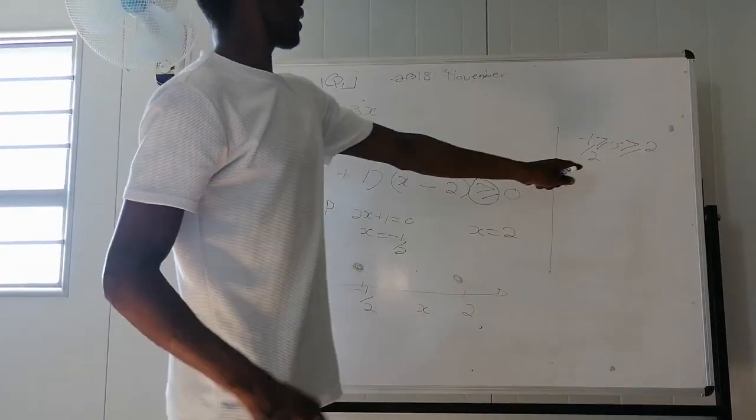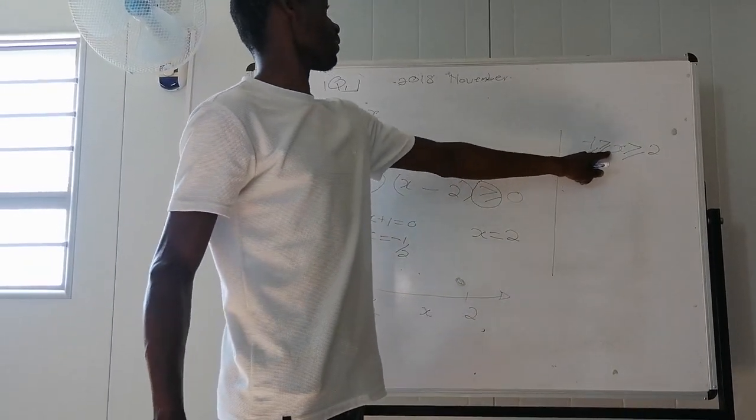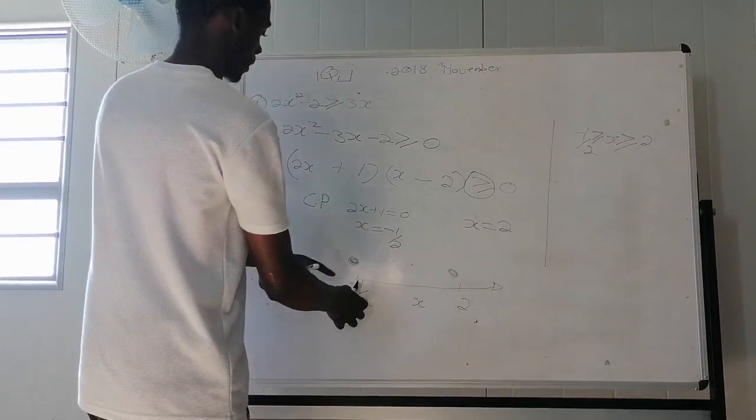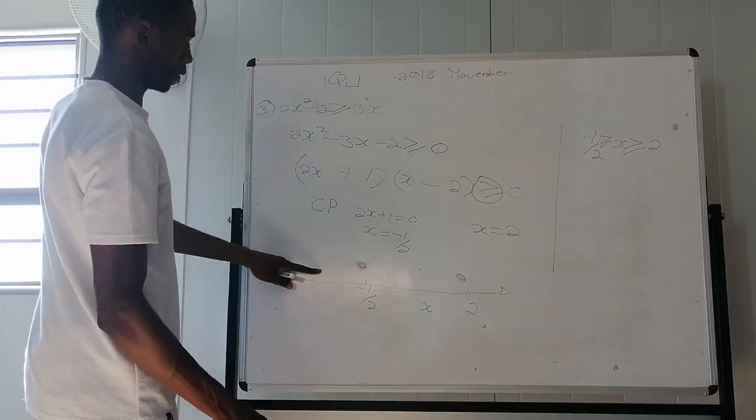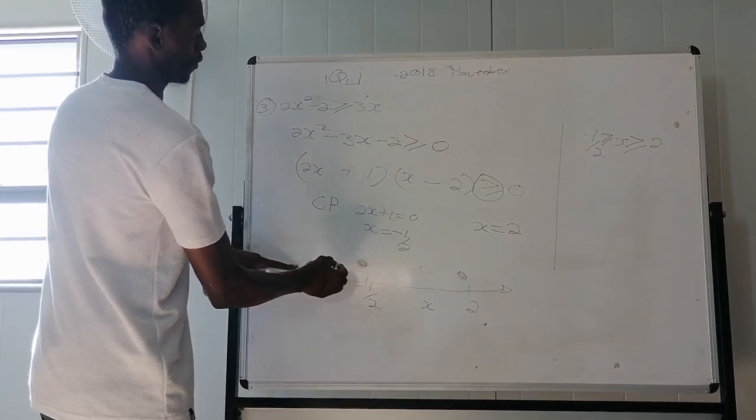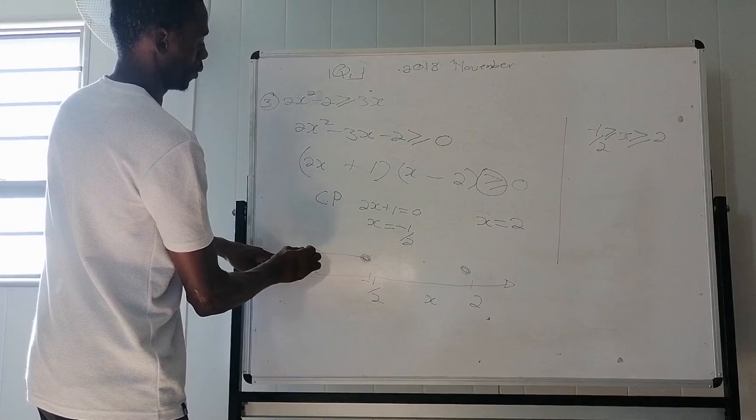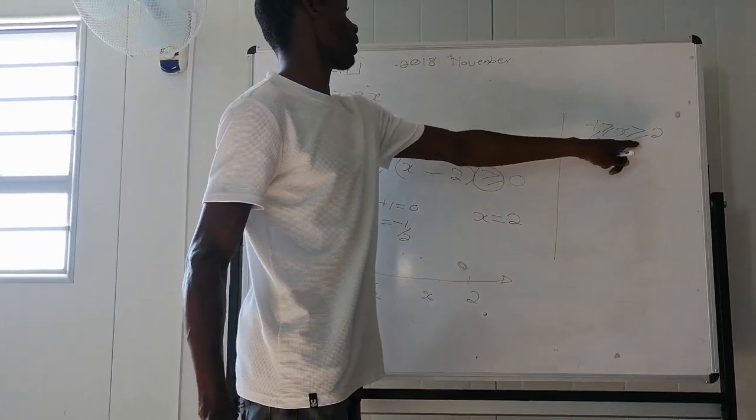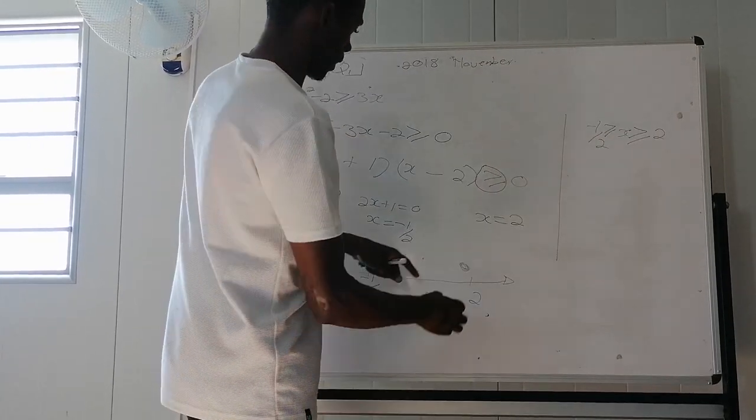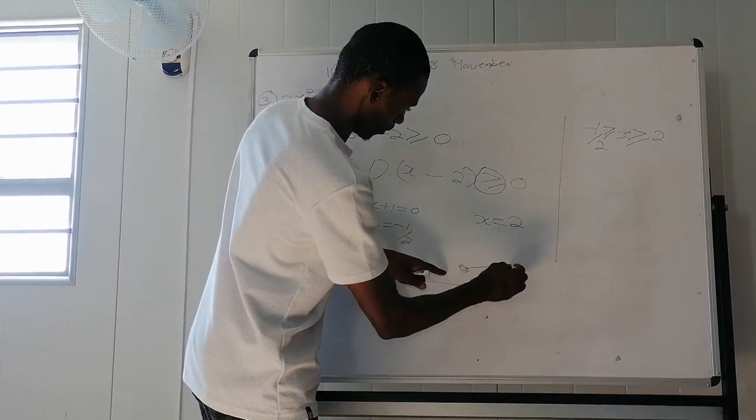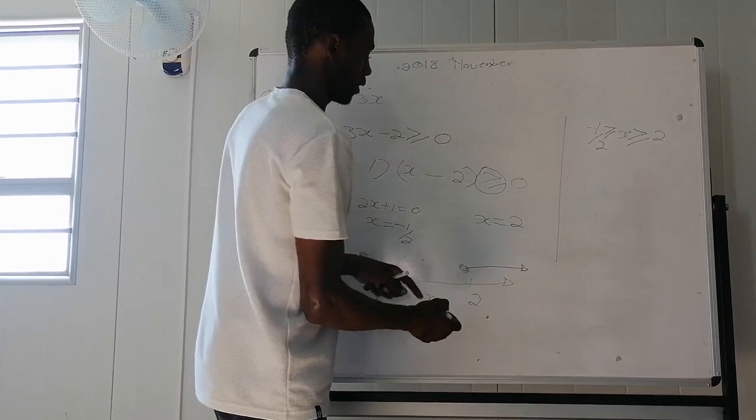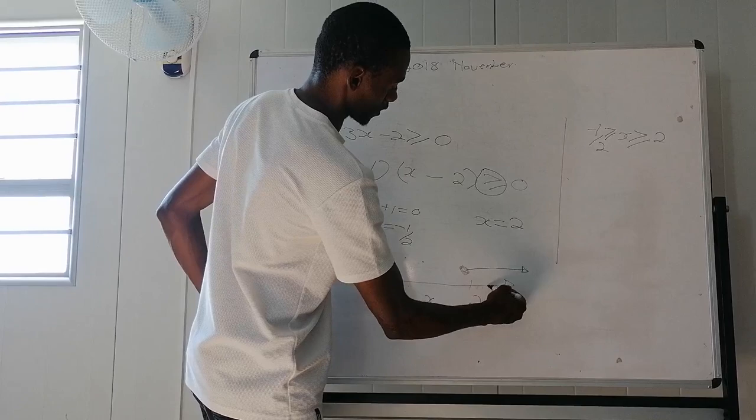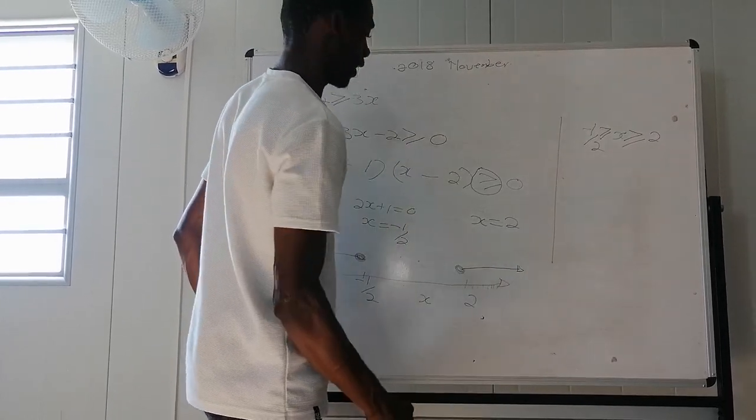This one says x is less than or equals to negative 1 over 2. This one says x is less than or equals to negative 1 over 2, which means on the other side, then x is greater or equals to 2. This one says x is less than or equals to negative 1 over 2, which means the numbers that follow this side are greater than 2.